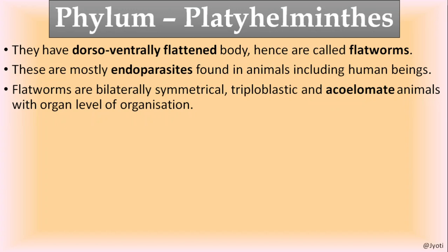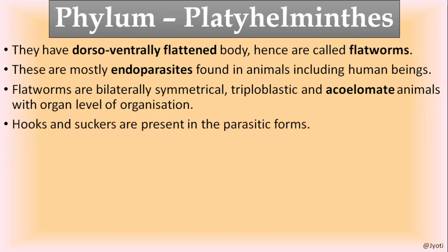These flat worms are bilaterally symmetrical, meaning the body can be divided into two identical halves in only one vertical plane. The body is triploblastic, consisting of three layers: ectoderm, endoderm, and middle mesoderm. Most importantly, these organisms are acoelomates — they don't have a coelom. In place of the coelom, mesodermal tissue is present, with no cavity between the gut and the body wall. They have organ level of organization.